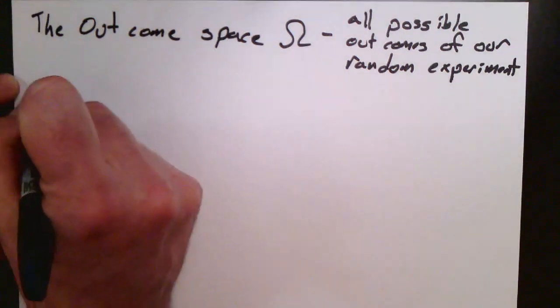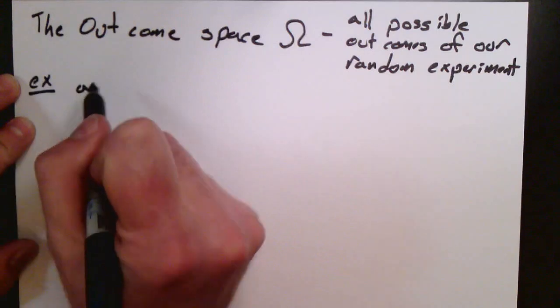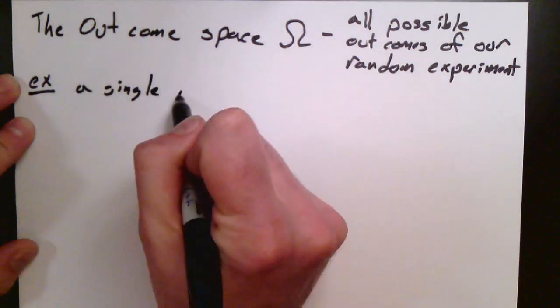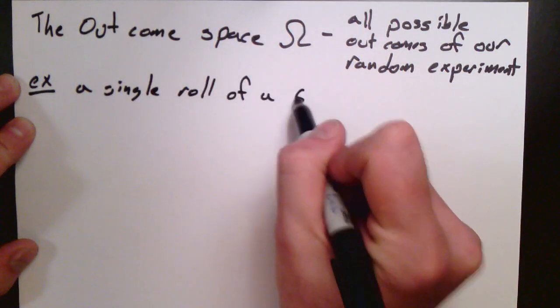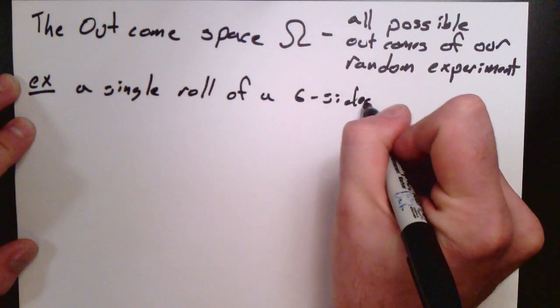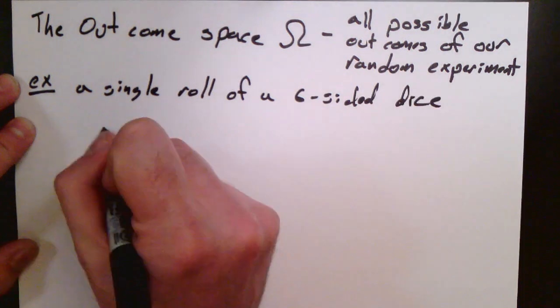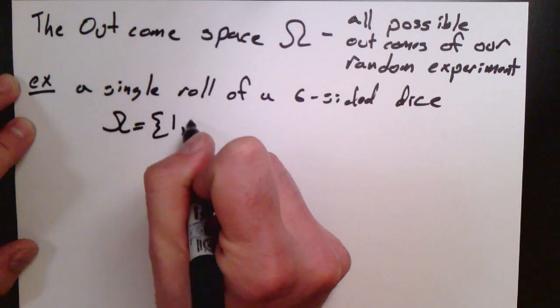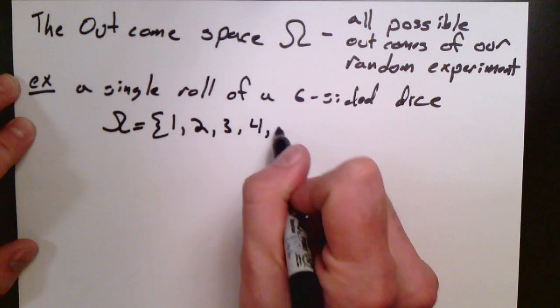So the first one is the rolling of a six-sided die. So in a six-sided die, the possible outcomes are one, two, three, four, five, six. So the set omega, the Greek letter omega, the outcome space, is simply the set of integers one, two, three, four, five, six.